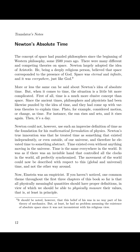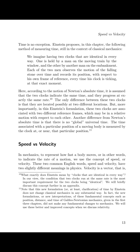Now, Einstein was an empiricist. One common theme throughout the first three chapters of this book is that all physically meaningful quantities should have proper definitions in view of which we should be able to physically measure their values — that is, at least in principle. Time is no exception. Einstein proposes in this chapter the following method of measuring time, still in the context of classical mechanics. We imagine having two clocks that are identical in every way. One is held by a man on the moving train by the window and the other by another man on the embankment. Each of the two men observes the motion of the falling stone over time and records its position with respect to his own frame of reference every time his clock is ticking at that exact moment.